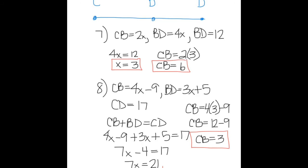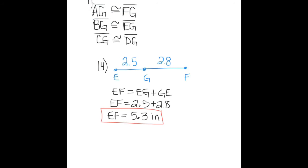Number 8: CB equals 4x minus 9, BD equals 3x plus 5, and CD equals 17. I know from the law of betweenness, since these three points are collinear, that CB plus BD equals CD. So I solve and I find out that x equals 3. Plug that back in to find the value of CB. I find out that CB also has a value of 3.